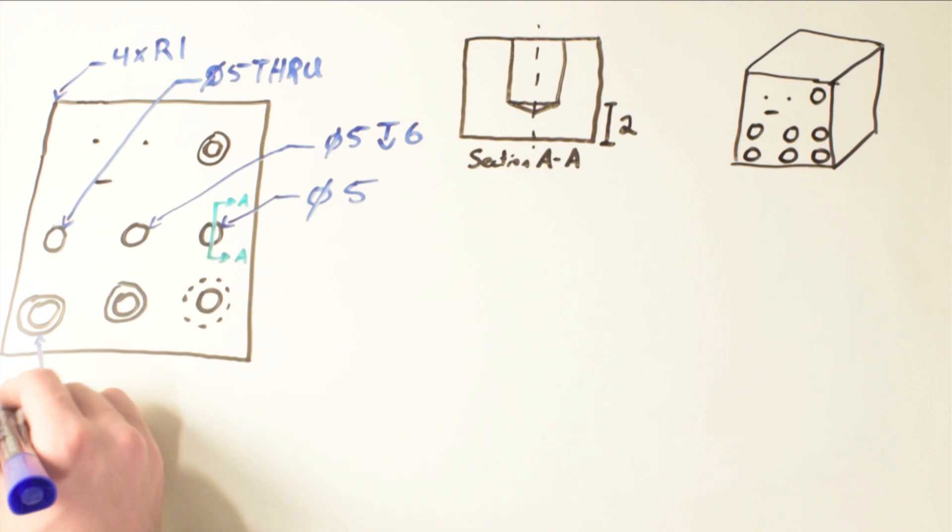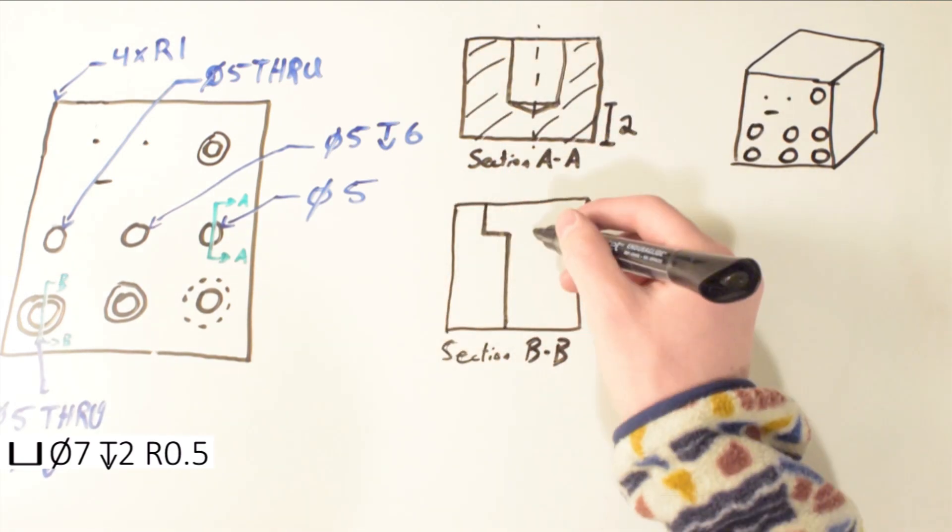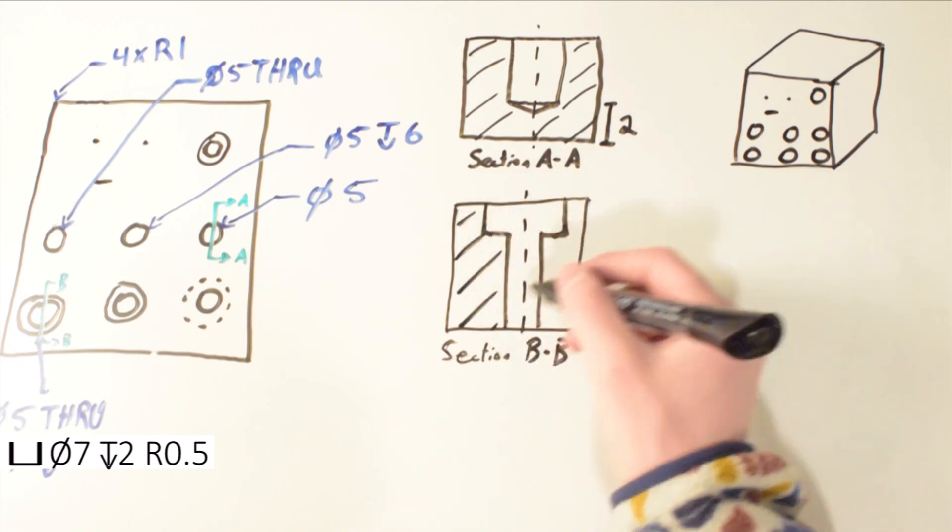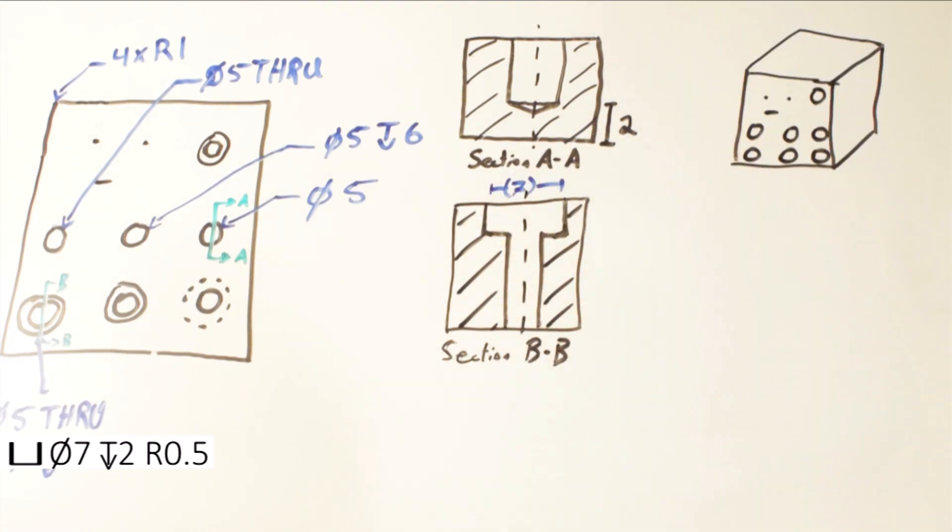Because many holes are for fasteners, you often see counterbore holes. This will typically be shown on the line below the diameter as the counterbore symbol, the diameter of the counterbore, and then the depth of the counterbore. Sometimes a radius of the fillet is specified, however I haven't seen this very often.